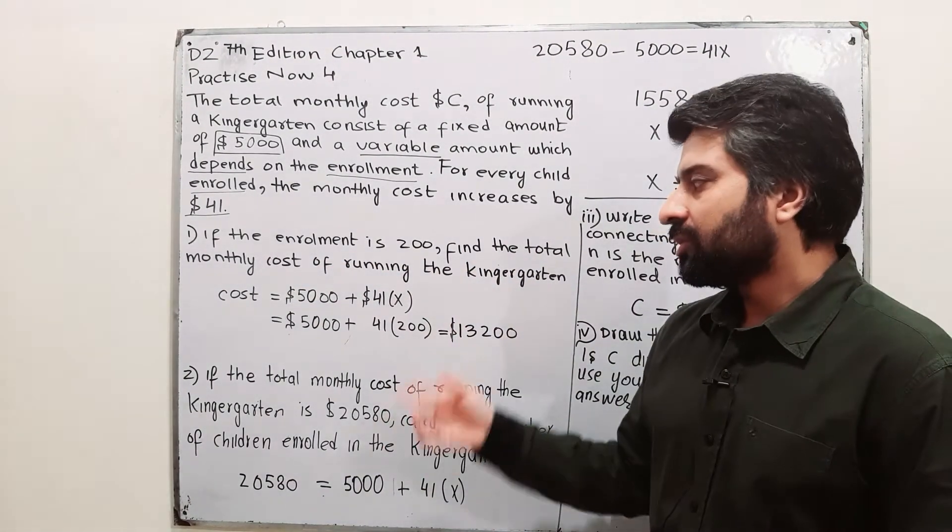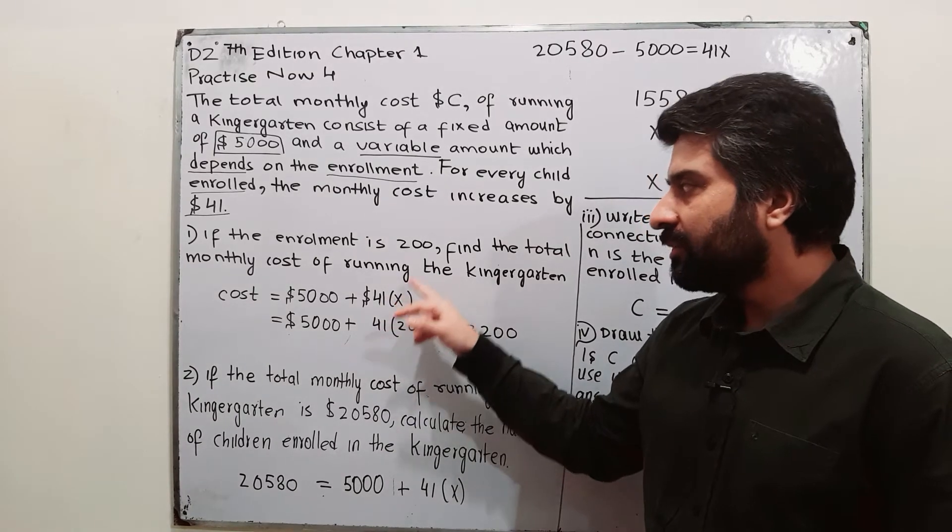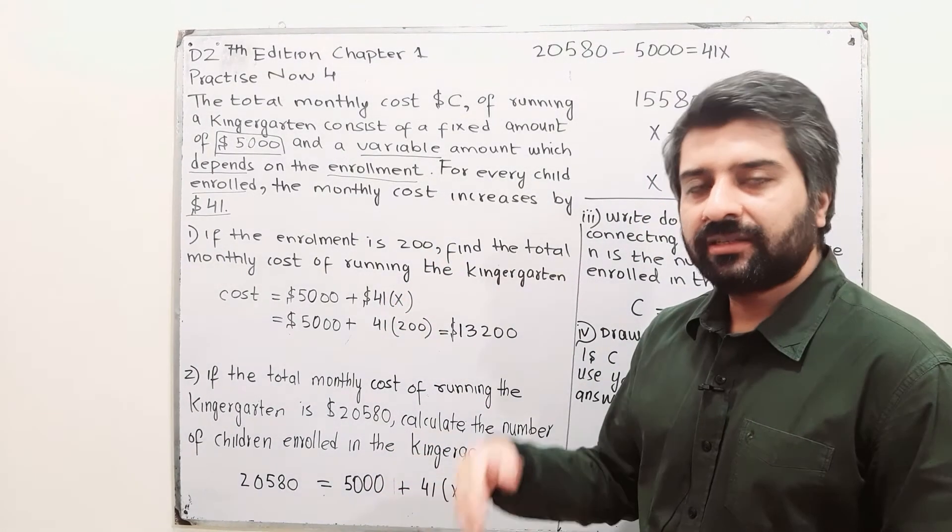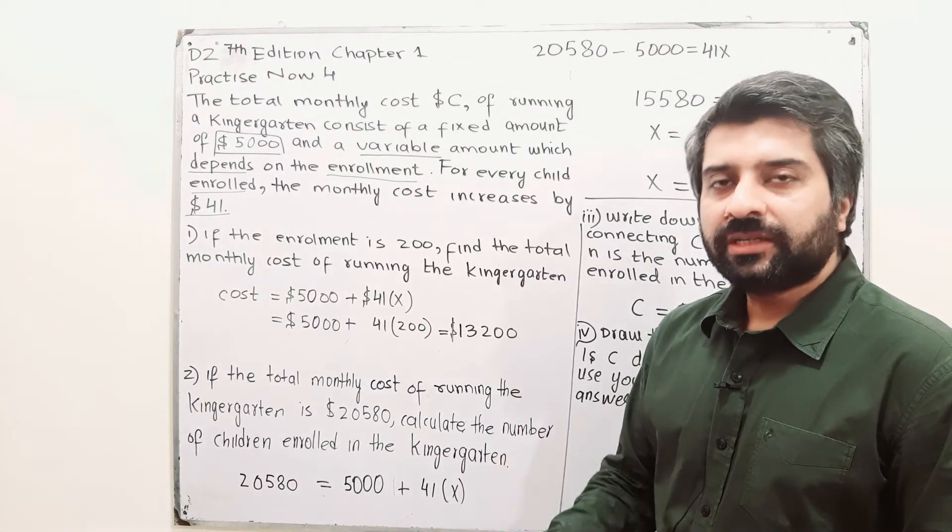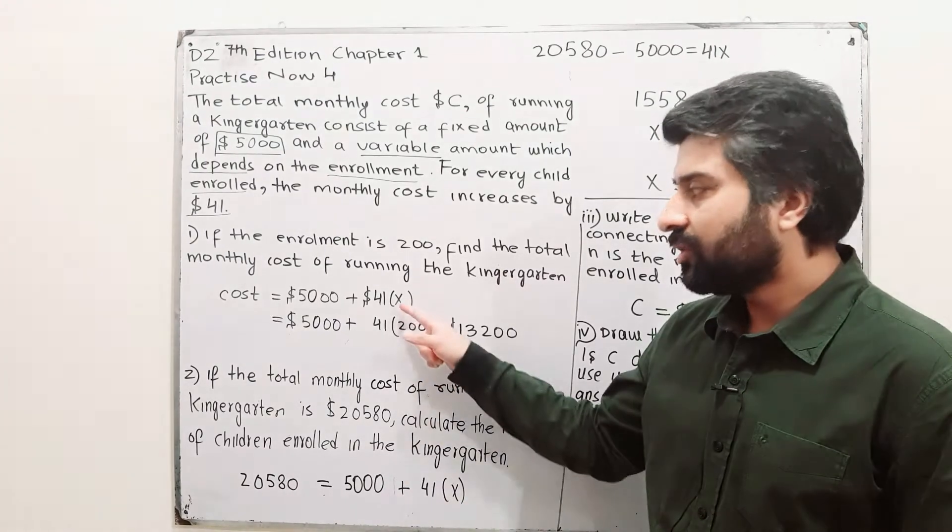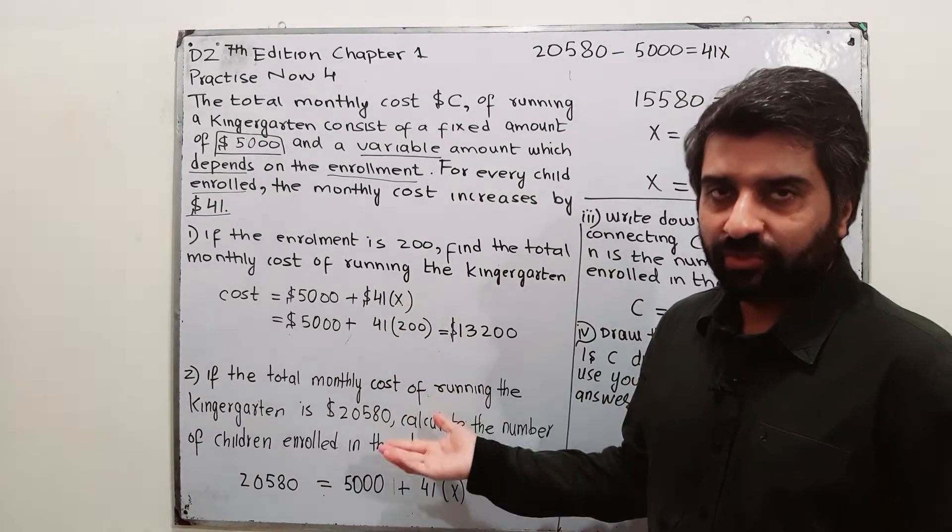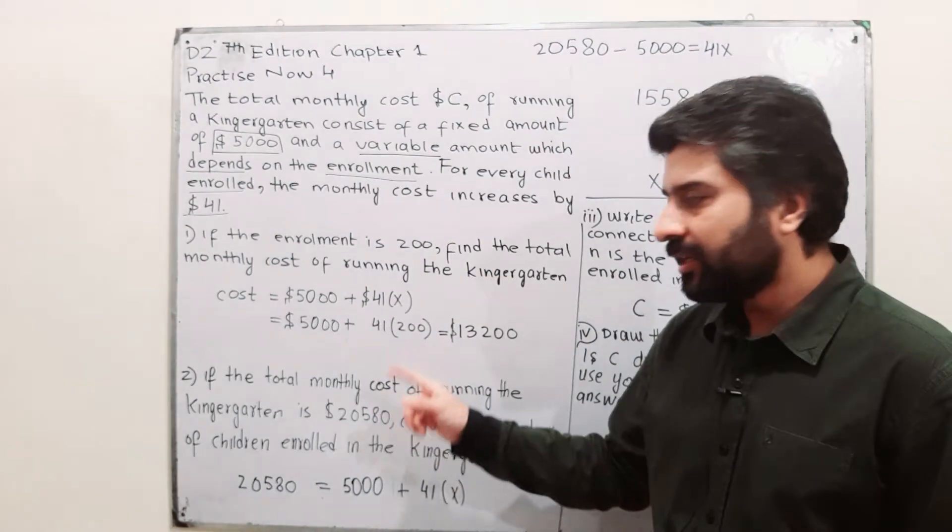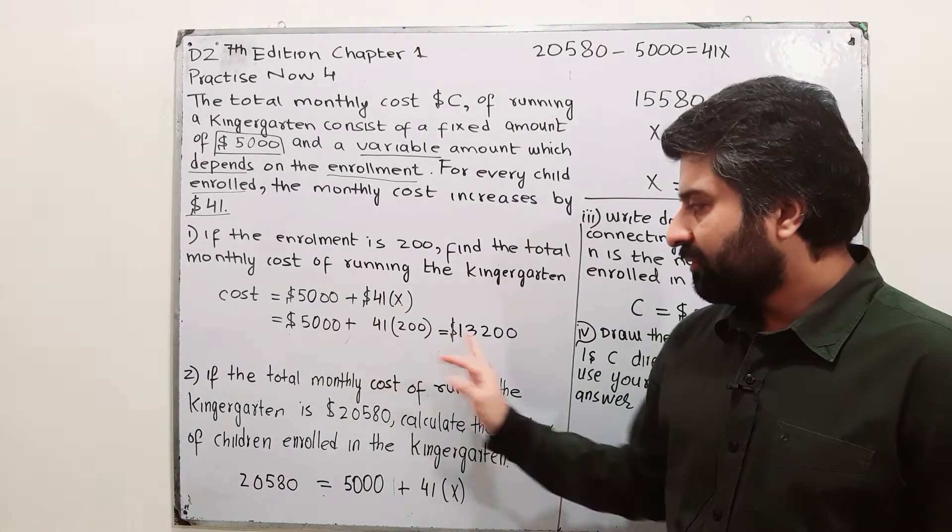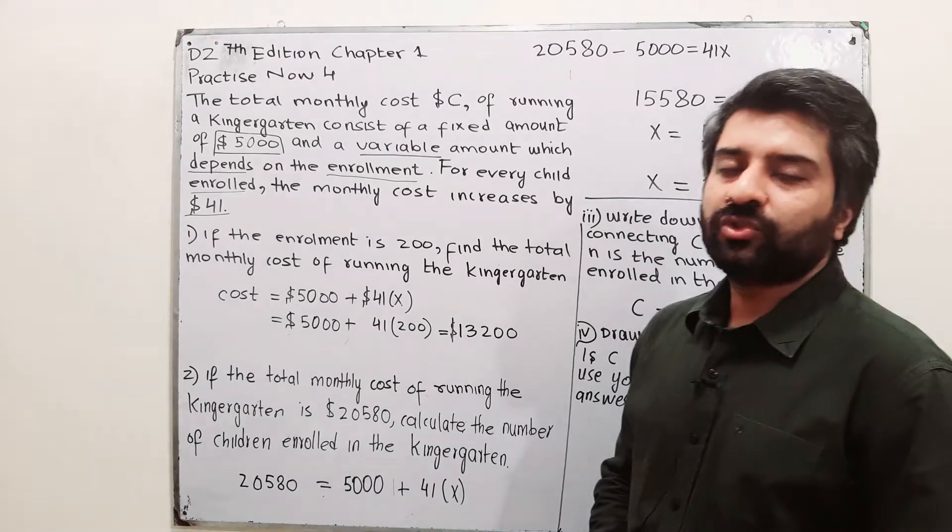So, the total cost will be, x will be replaced by 200. The reason is that there are 200 students. How many students are there? For every one student, you have to pay $41. So, for 200, it will be 200 into 41 plus 5,000 will give you $13,200.